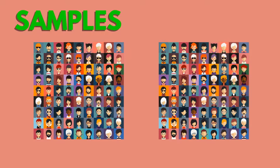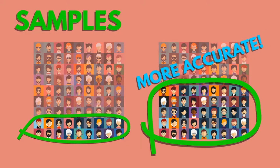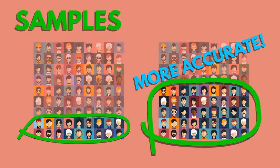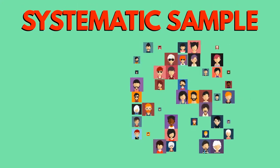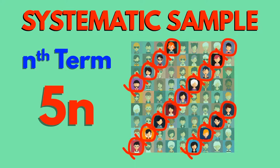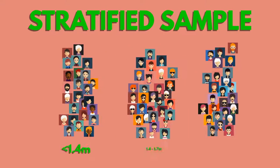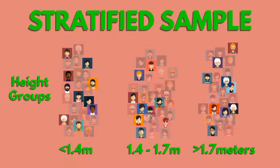In research projects we often need to gather data for just a sample of a whole group. Remember, the larger your sample, the more accurate your data will be in representing the whole. A systematic sample is where every nth term from a list is chosen. In a stratified sample, everything is put into groups and then samples are taken from each group. Why do you think this might give a more accurate understanding of the data?